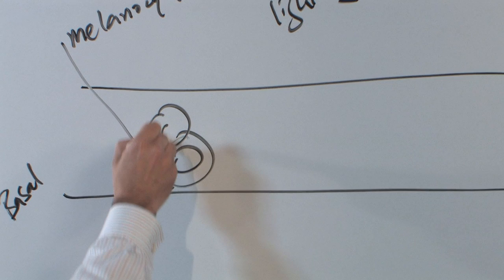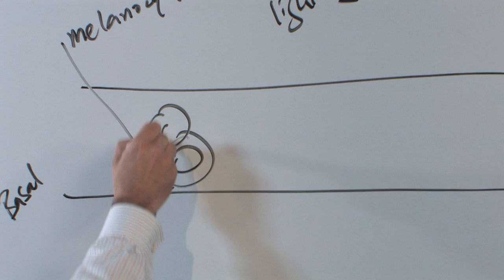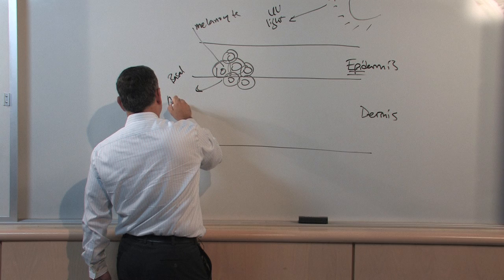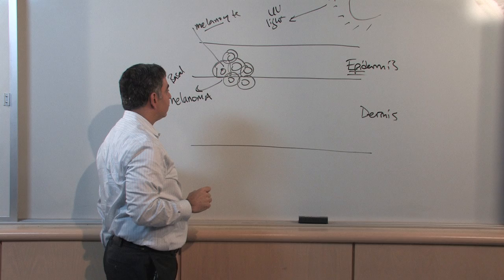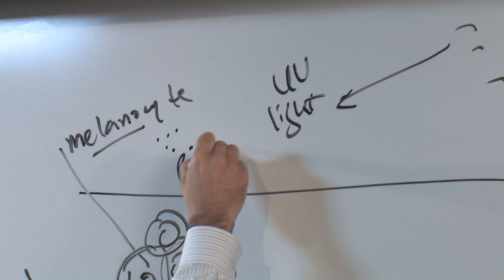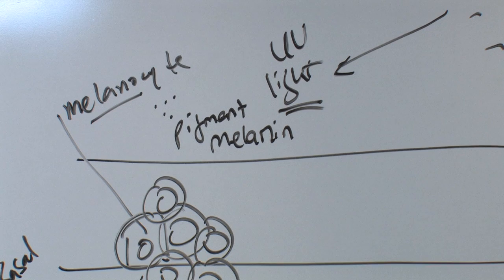If melanocytes are misbehaving, they can grow out of control, and this uncontrolled process is the cancer itself, and that is melanoma coming from melanocytes. Melanocytes produce a pigment called melanin, and that protects us against UV light.